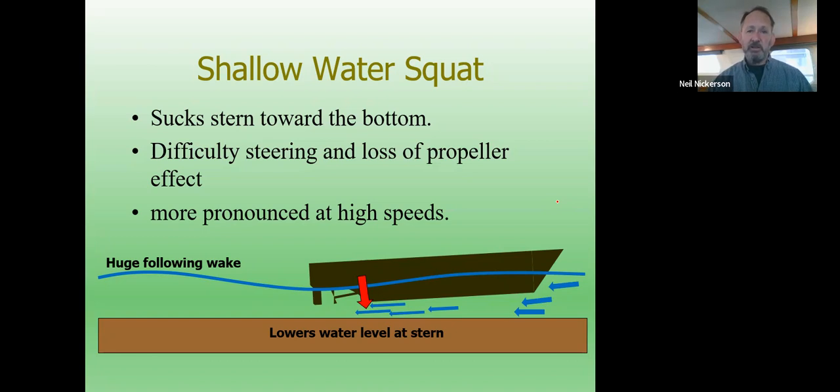Here in southeast Alaska, we see this on the ferries when they're going through Wrangel Narrows, or through Olga Strait, Neva Strait, near Sitka. We could watch the water level, it's like the tide's going out real fast. Water level sucks off the beaches on both sides, and then comes rolling back behind when that huge following wake comes behind you.